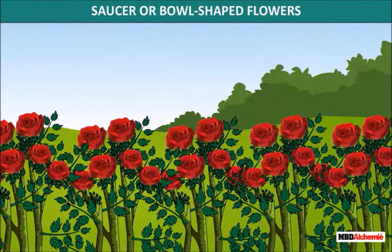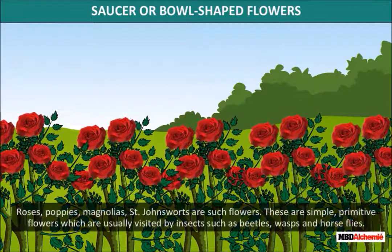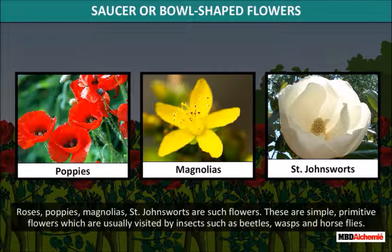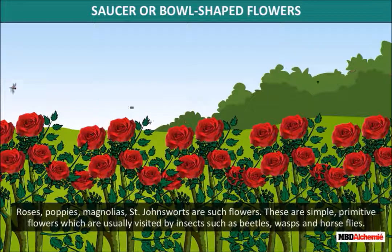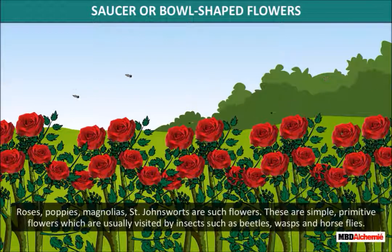Saucer or bowl-shaped flowers include roses, poppies, magnolias, and St. John's wort. These are simple primitive flowers, which are usually visited by insects such as beetles, wasps, and horseflies.